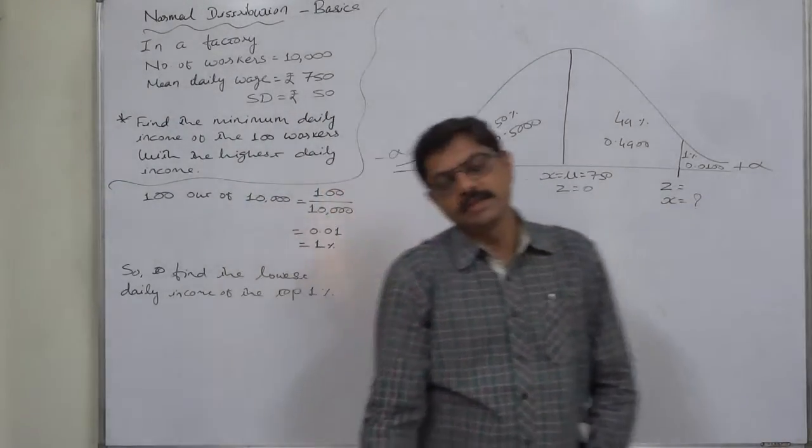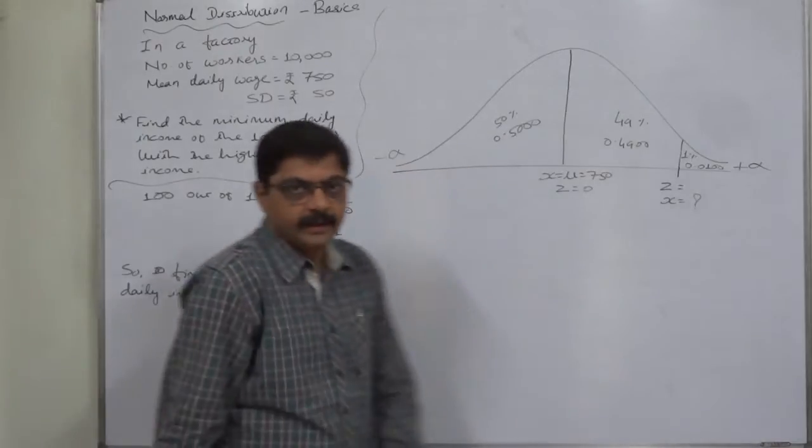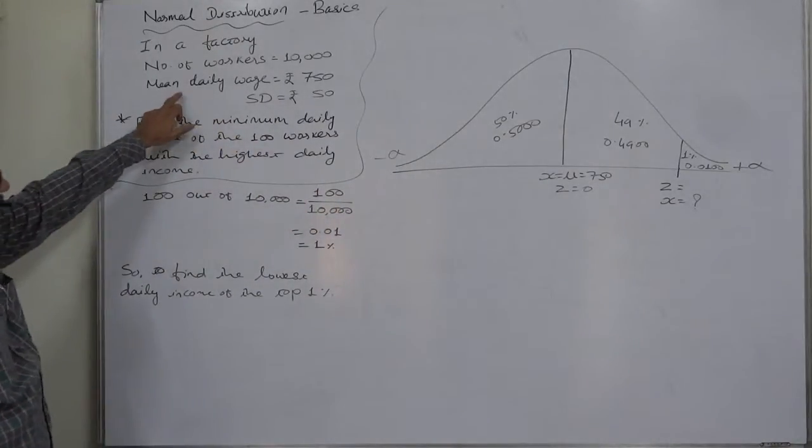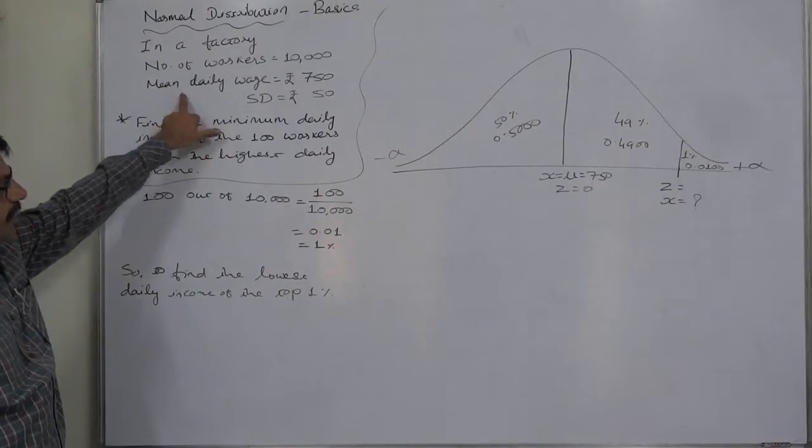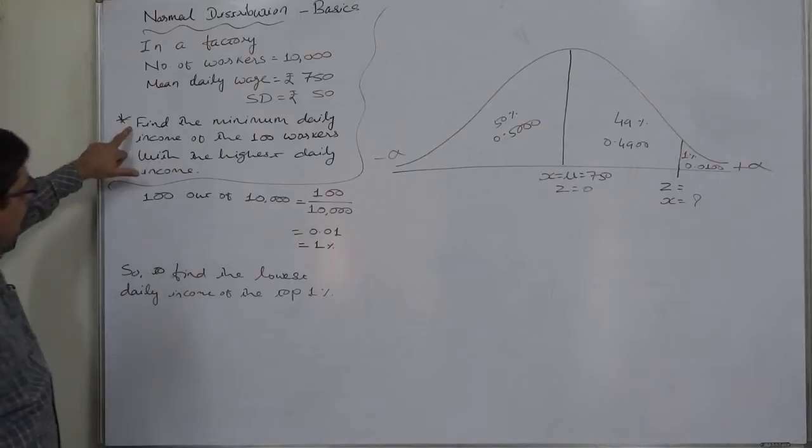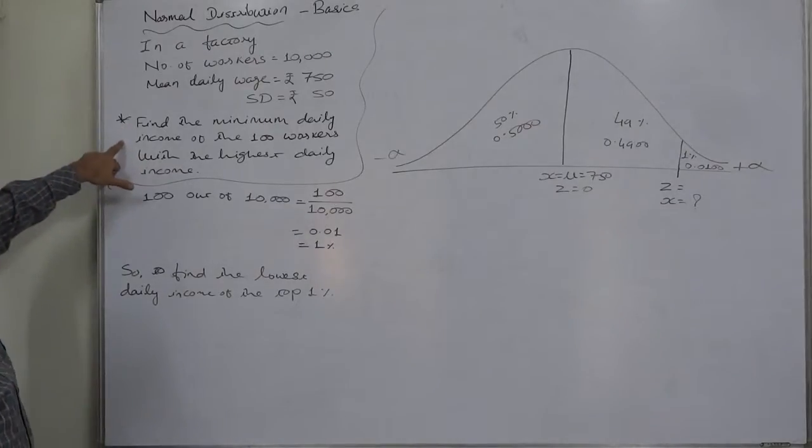Hello and welcome to a new case in normal distribution. In a factory, there are 10,000 workers, and the mean daily wages is Rs. 750 with a standard deviation of 50. Find the minimum daily income of the 100 workers with the highest daily income.